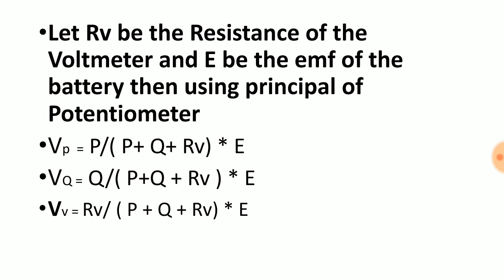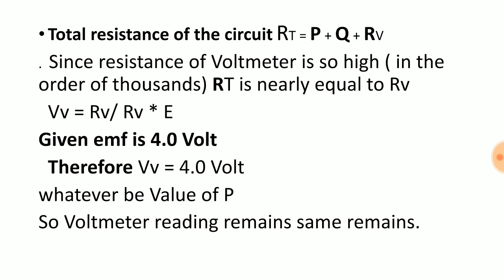Voltage across the voltmeter is equal to E because Rv and Rv gets cancelled. So voltage across V will be E. That means whatever be the value of P, the voltmeter always shows the same reading.